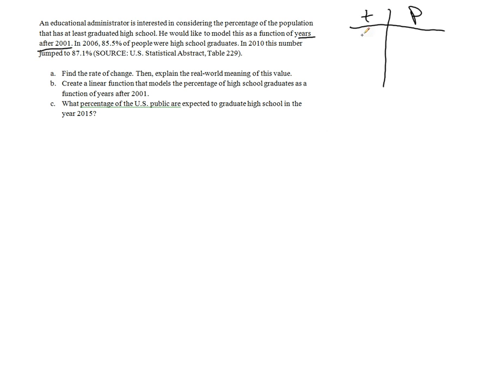In 2006, which is five years after 2001, 85.5% of people were high school graduates. It's not necessary to use a decimal here because we're not actually taking percentages of something, we're just stating the actual percentage itself. So you can use 0.855 if you want, but 85.5 is fine in this case since you're not multiplying it by anything.